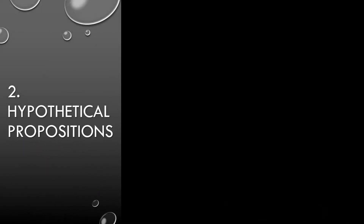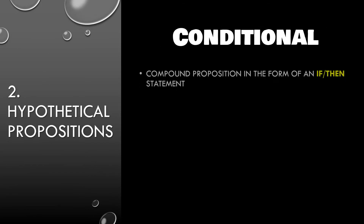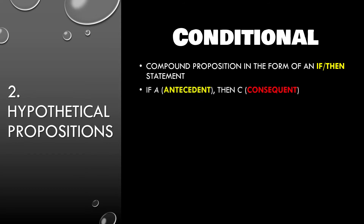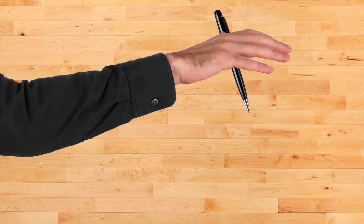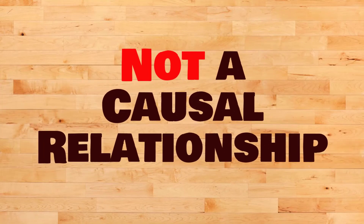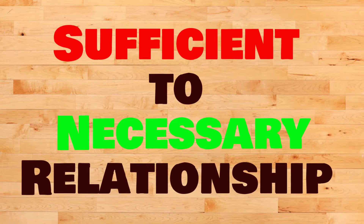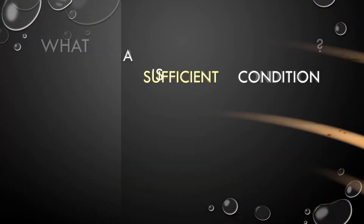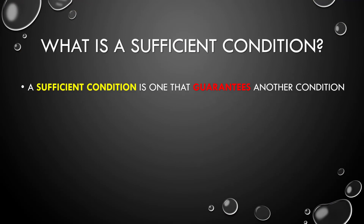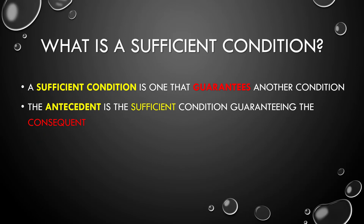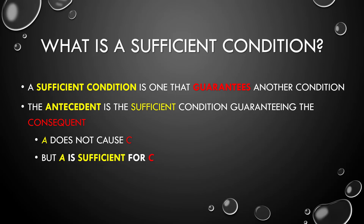Next, hypothetical propositions — also known as conditional — are compound propositions in the form of an if-then statement: if A (the antecedent), then C (the consequent). For example: 'If I let go of the pen, then it will fall to the ground.' But the structure does not express a causal relationship — A is not said to be causing C. The antecedent's relationship to the consequent is merely that of a sufficient to a necessary condition. A sufficient condition is one that guarantees another condition — the antecedent is a sufficient condition guaranteeing the consequent. A does not cause C, but A is sufficient for C, meaning it's enough to let us know that C obtains.